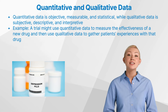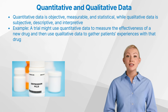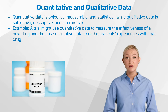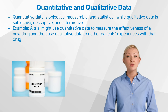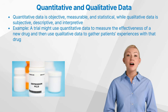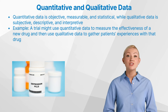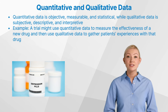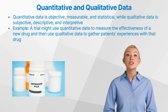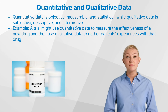In the realm of clinical trials, quantitative and qualitative data often work hand-in-hand. For example, a trial might use quantitative data to measure the effectiveness of a new drug, and then use qualitative data to gather patients' experiences with that drug. This combination provides a more comprehensive understanding of the treatment's impact.